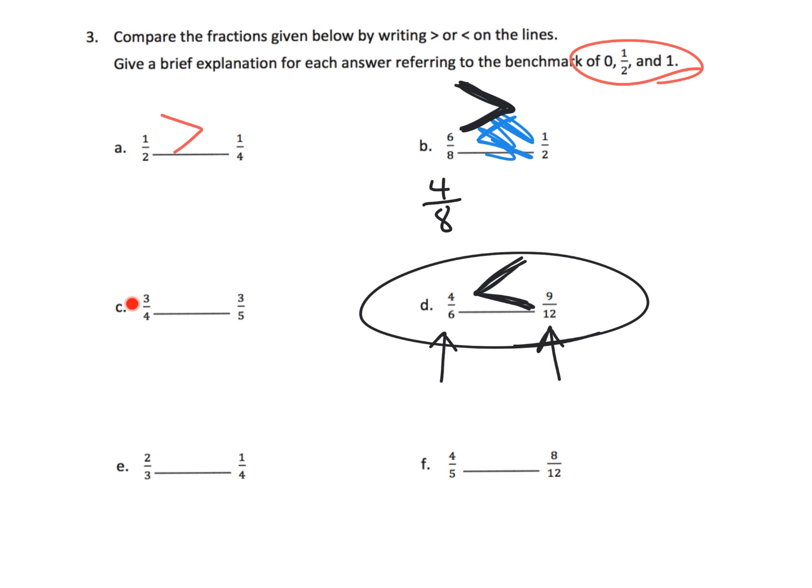Here's another example where both fractions are larger than a half. Now you have to decide which one's closer to a whole. Students might say in both cases you have three pieces, but quarters are larger than fifths, so three-quarters is going to be larger than three-fifths. But at this point, fourth graders are not required to know that kind of reasoning yet. Eventually they will get there, and ultimately students will be using some sort of standard algorithm.